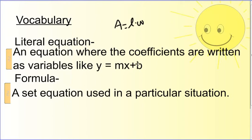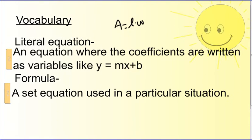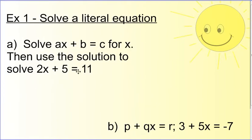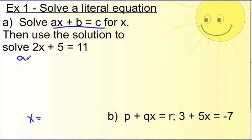We're going to see how we work with these types of problems with lots of different variables. Number one: we want to solve ax plus b equals c for x. When it says solve for x, it means we want x by itself — x equals something. Think of a, b, and c as numbers; x is the only variable.